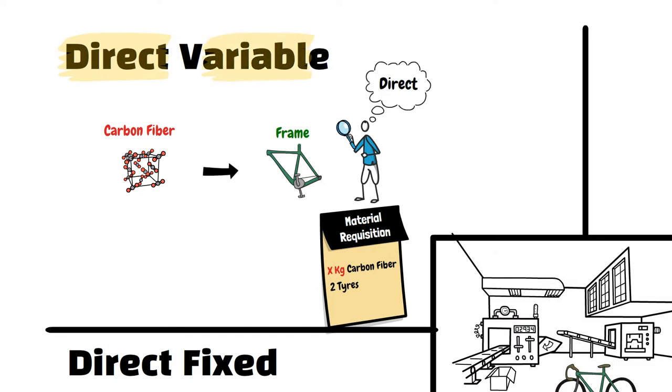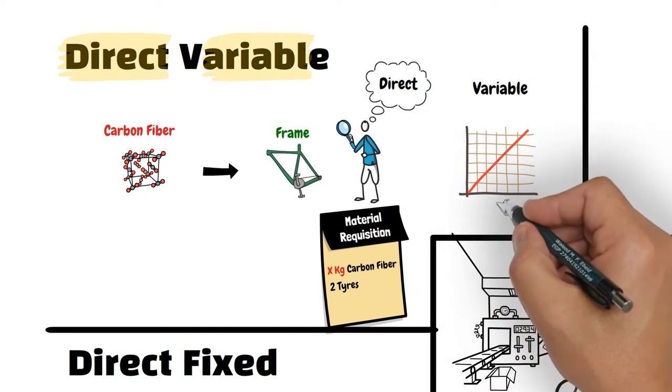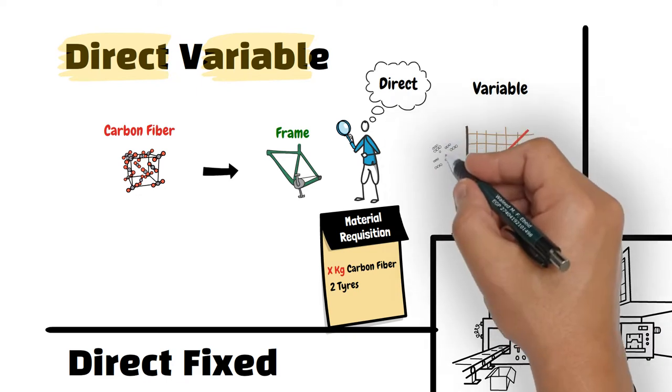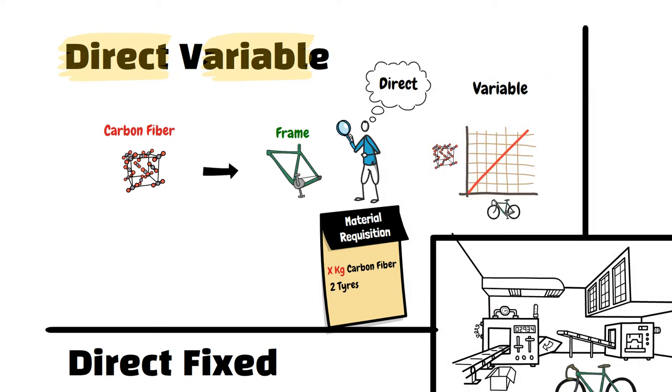Also, it is a variable cost because as the number of bikes produced changes, the amount of carbon fiber used in producing the frames changes proportionately.